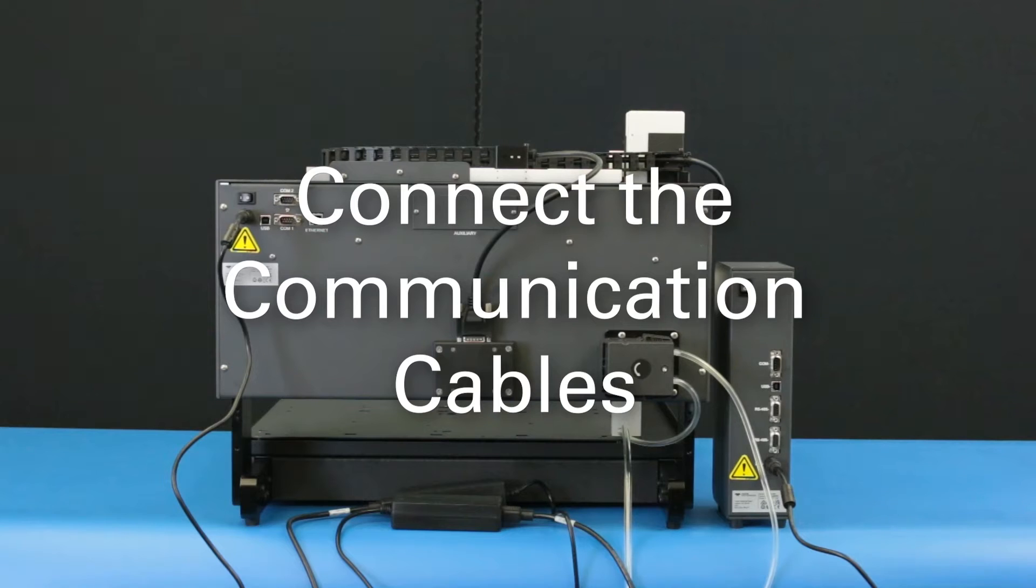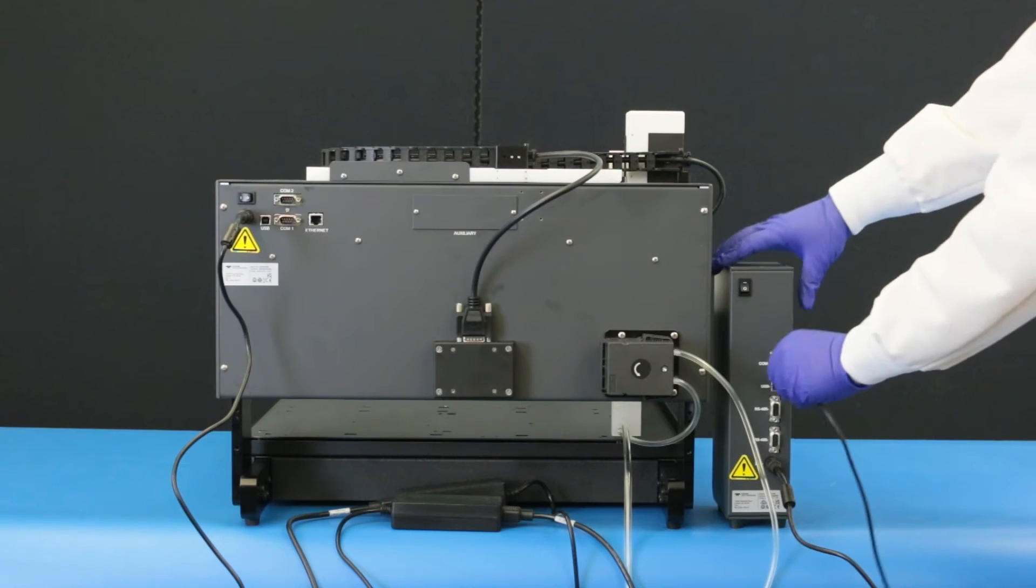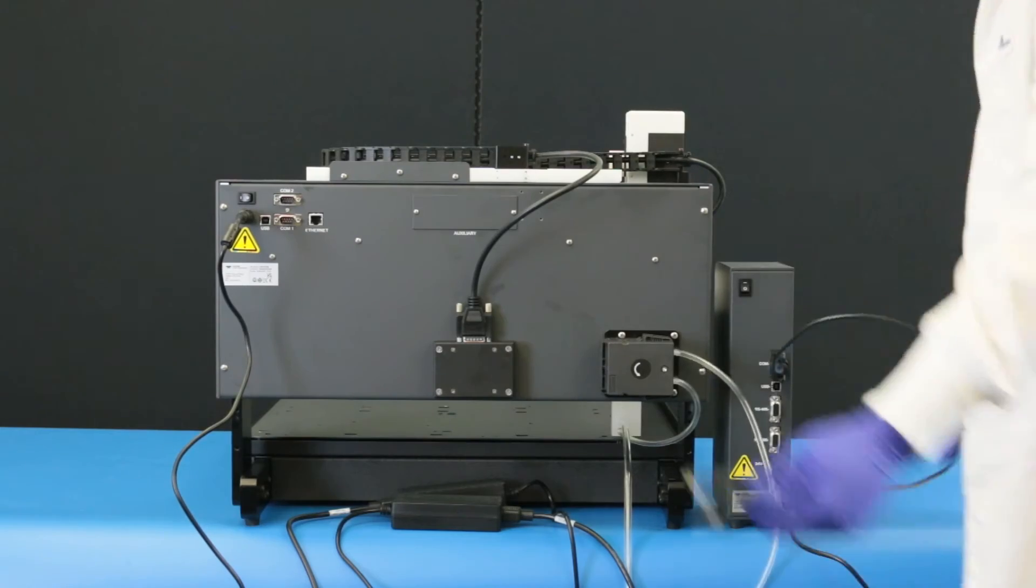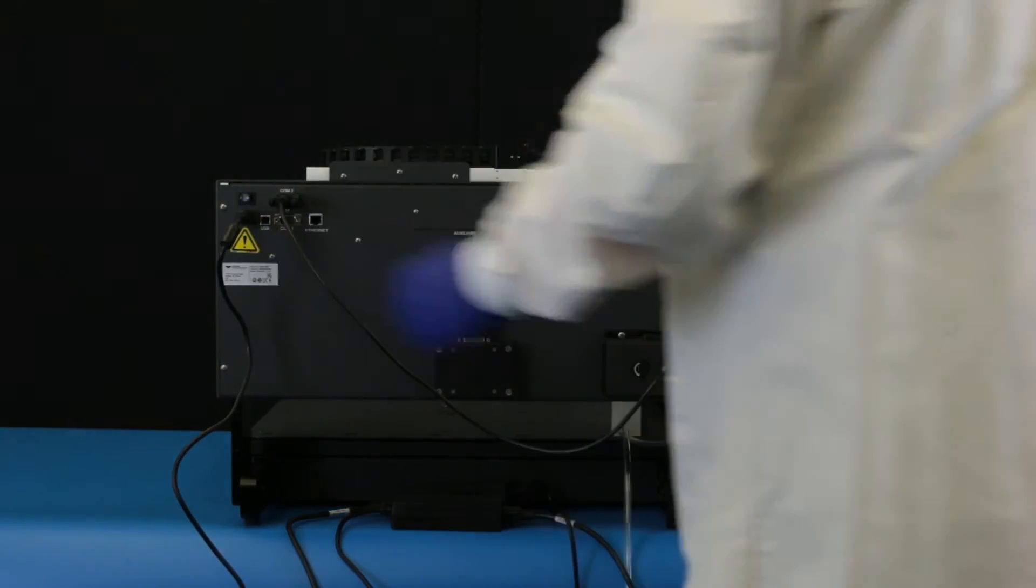Connect the communication cables. Connect a serial cable from the syringe pump module to the COM2 port on the autodiluter. This is the upper of the two ports.